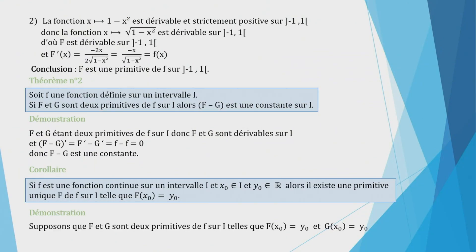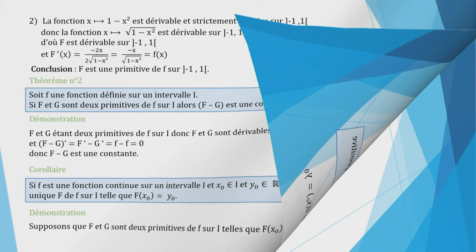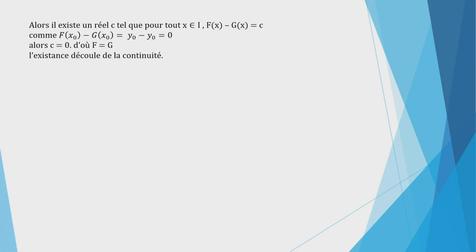Démonstration : supposons que grand F et grand G sont deux primitives de petit f sur I telles que F(x₀) = y₀ et G(x₀) = y₀. Il existe un réel c tel que pour tout x ∈ I, F(x) - G(x) = c. Or F(x₀) - G(x₀) = y₀ - y₀ = 0, donc c = 0, d'où F = G. L'existence découle de la continuité de petit f.